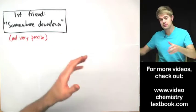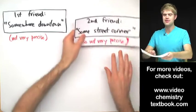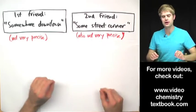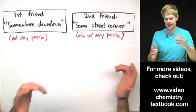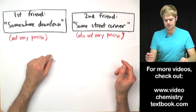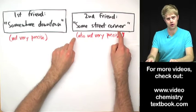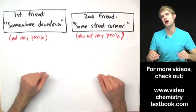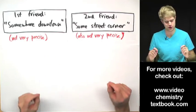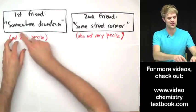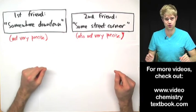So your other buddy is hanging out with him and so you call them. And then the second friend is also pretty unhelpful. And they say, oh yeah, man, I think we're on some street corner. This is also an answer that's not very precise. So here are the two pieces of information you're starting with. That your friends are somewhere downtown and they're on some street corner.